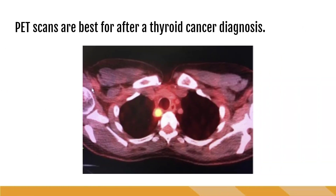PET stands for positron emission tomography and is a combination of a CT scan and a nuclear medicine test. Although PET scans can be used at any point during a patient's care, we typically see them being done after a thyroid cancer diagnosis. The PET can detect metastatic involvement of nearby structures or recurrent disease post-thyroidectomy. This image shows a bright orange spot, which is a lymph node that papillary thyroid cancer has metastasized to. These look similar to CTs but with a pinkish glowing orange overlay where very bright areas are suspected to be cancerous or metastatic.